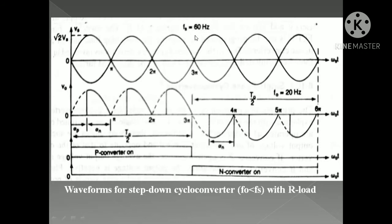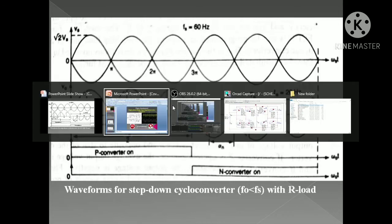In this particular waveform, the output frequency becomes one-third of the supply frequency. If the supply frequency is 60 Hz, the output becomes 20 Hz. In our PSpice simulation we have taken two alternations of the supply voltage, so based on that we will get the output frequency and the supply frequency relationship.